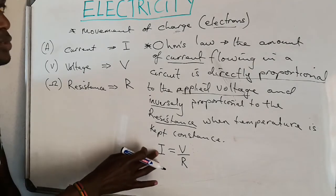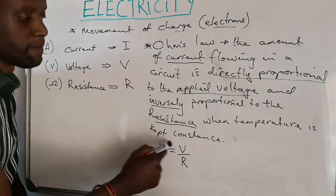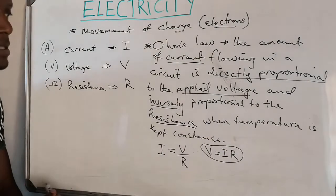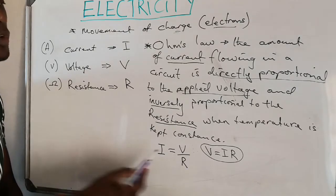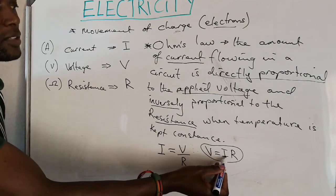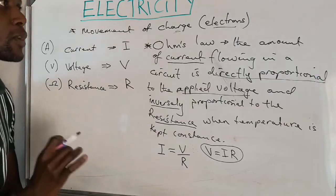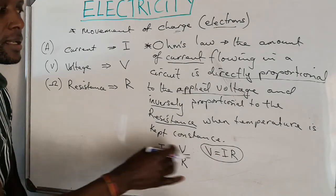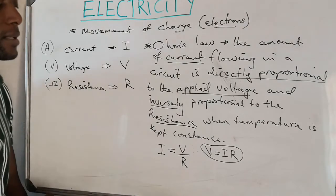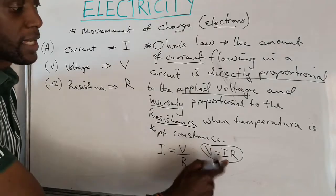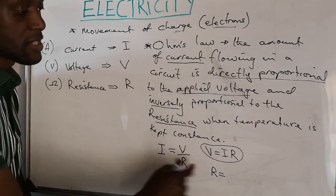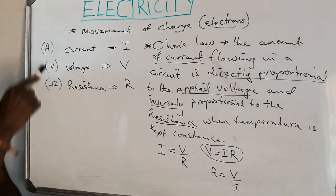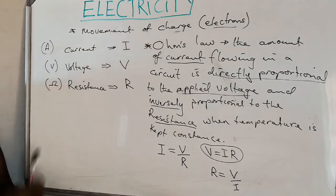Ohm's Law is summarized in this formula: current is directly proportional to the applied voltage over resistance, i.e., I = V/R. You can make V the subject of the formula and say voltage equals current times resistance (V = IR). However, when stating Ohm's Law correctly, we talk about the current being directly proportional to the voltage and inversely proportional to the resistance. You can also rearrange to find resistance: R = V/I. It is very important to remember your units for each item in this formula.